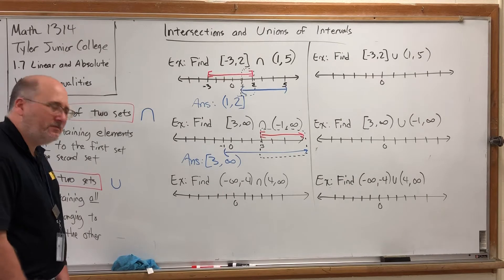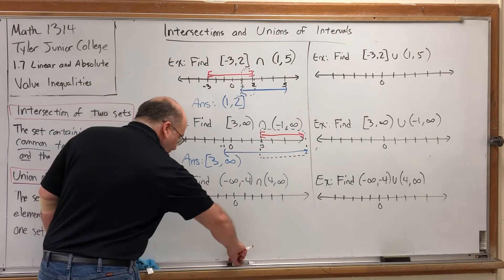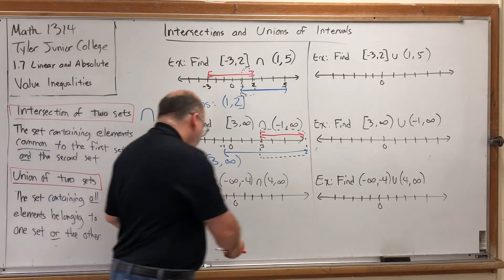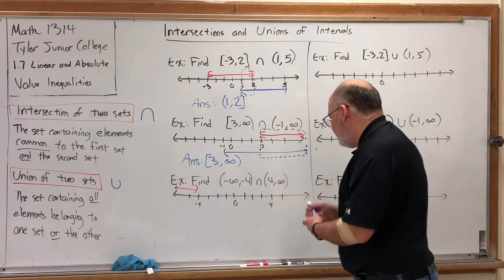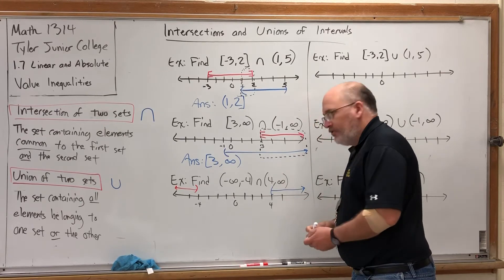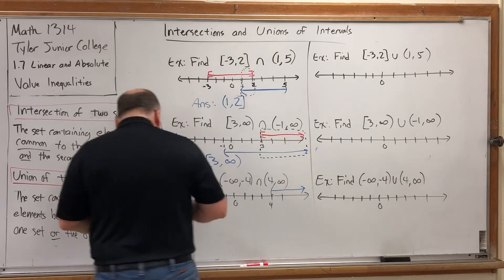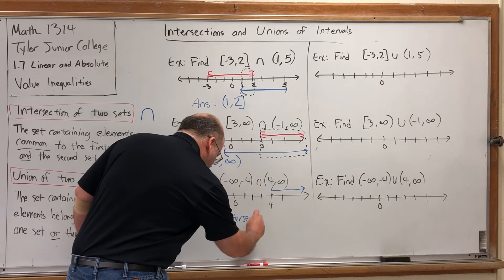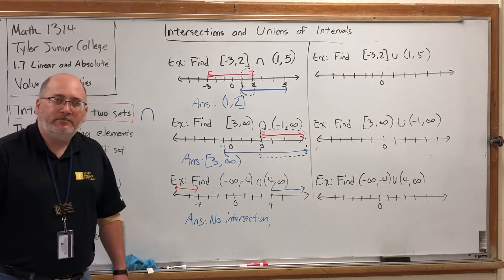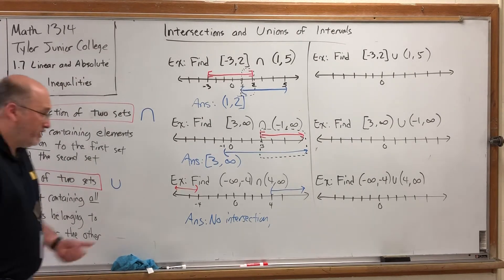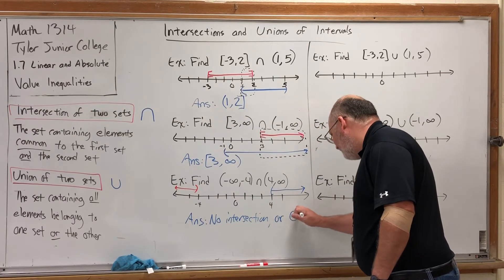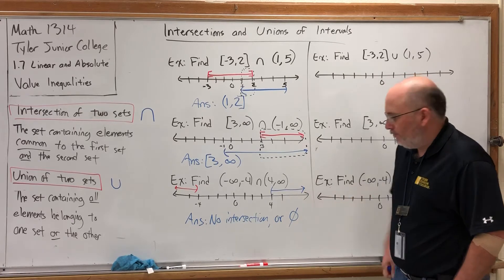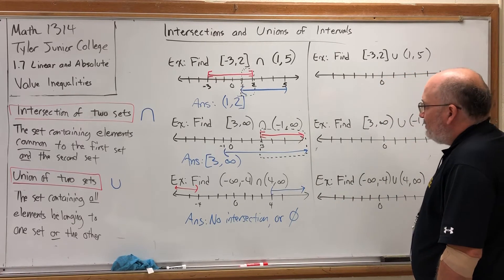For the last intersection example, the first interval starts at negative infinity and goes to negative 4 with a parenthesis — it doesn't include negative 4. The second interval begins at 4 with a parenthesis and goes to infinity. Where do these intersect? Where do they overlap? They don't. So there's no intersection. The symbol for a set that has nothing in it is the empty set — a circle with a slash through it. It is possible for an intersection to be empty if two intervals do not overlap.